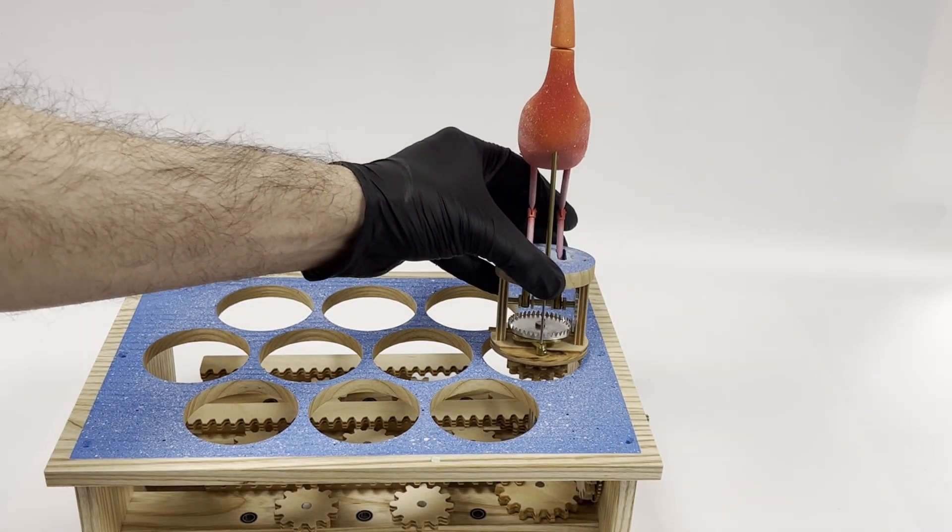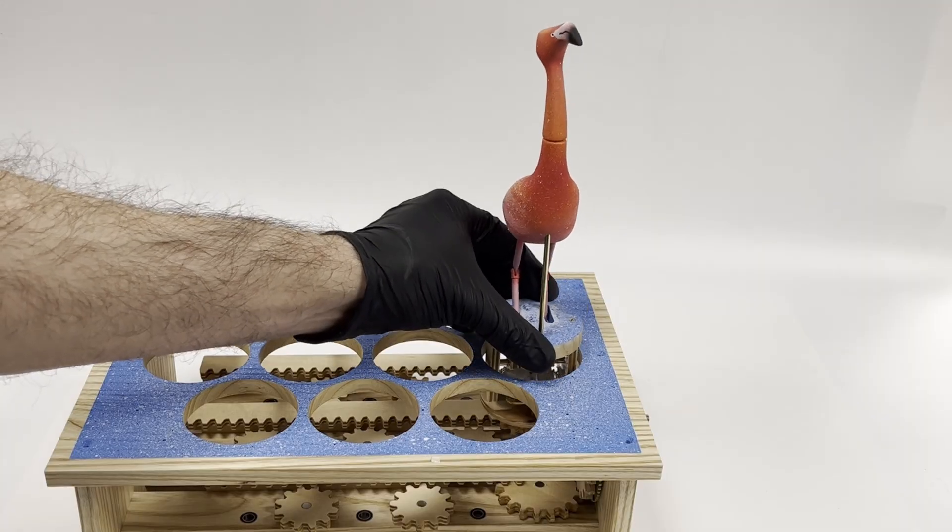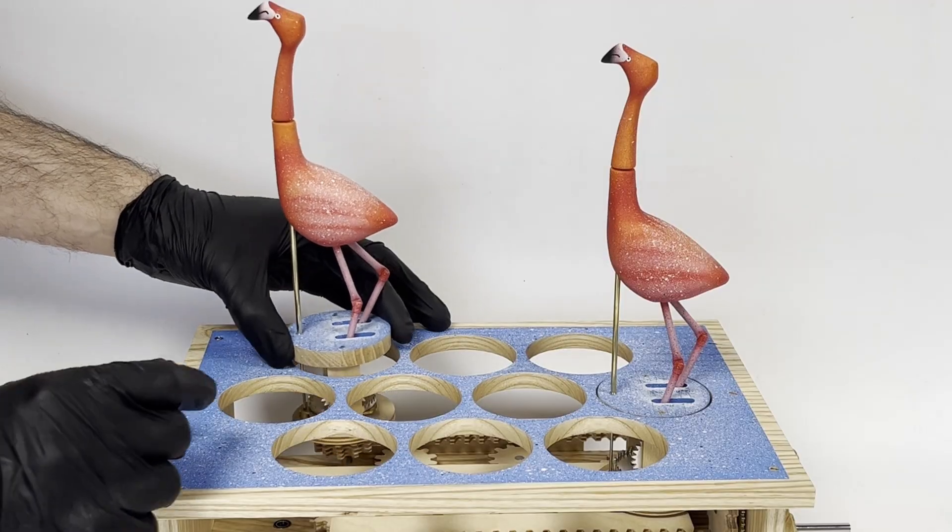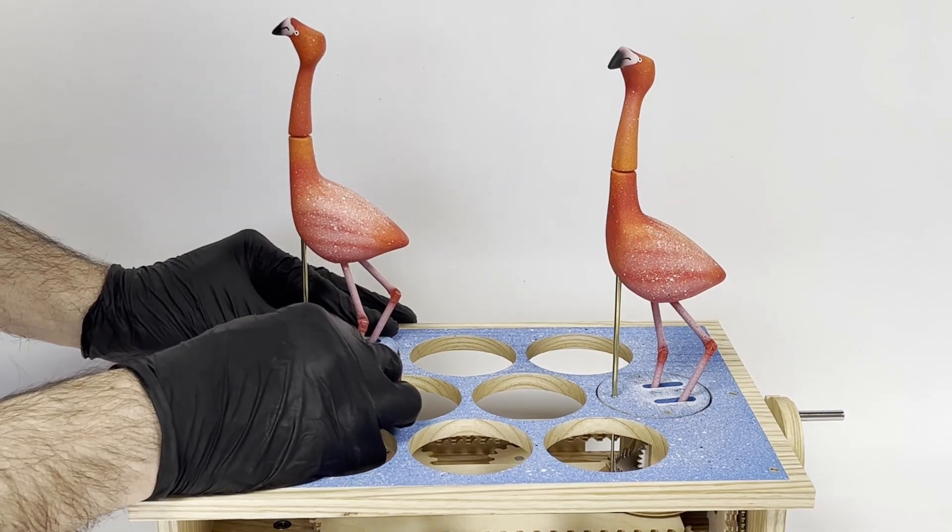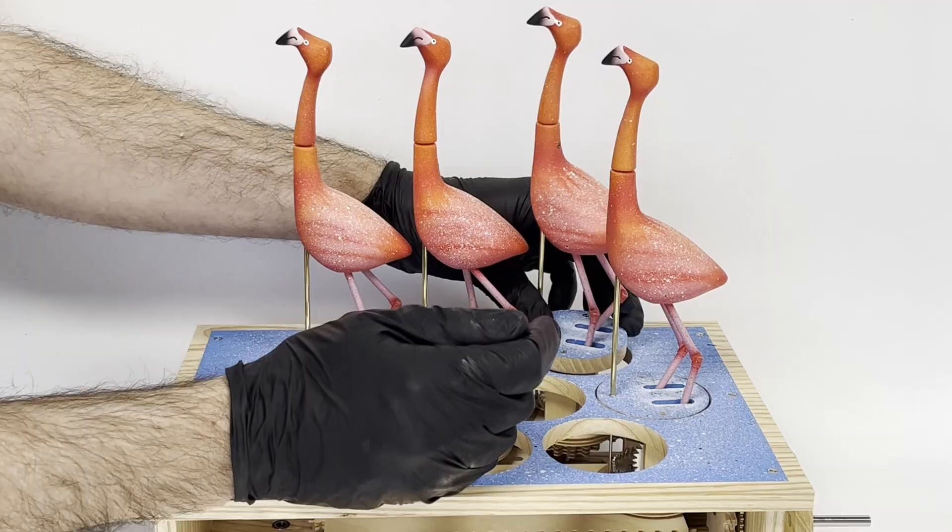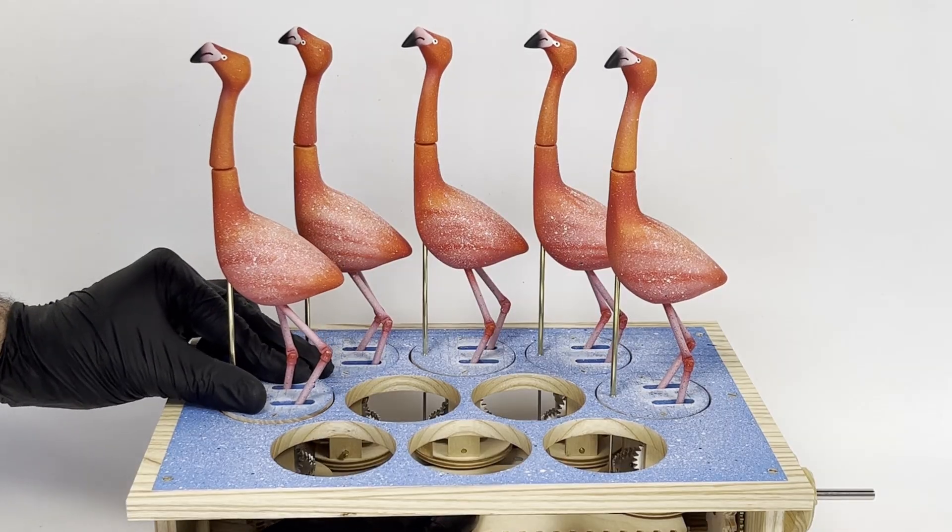The bottom gear of each flamingo unit engages with the main gear train, and the second gear above it meshes with the rack system. As I install the rest of the units one by one, there's a bit of a gentle wiggle involved to make sure each set of gear teeth lines up perfectly with the next.